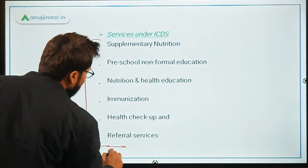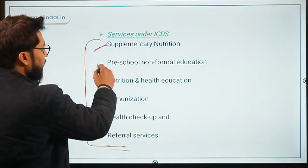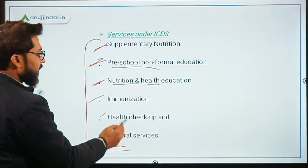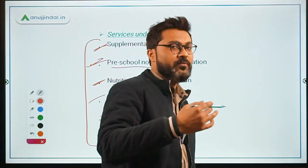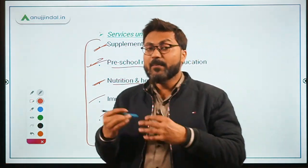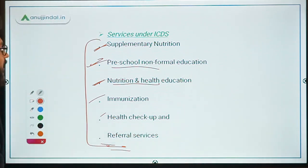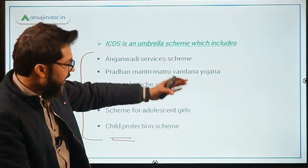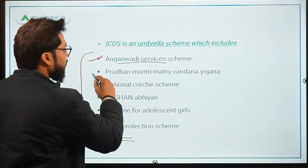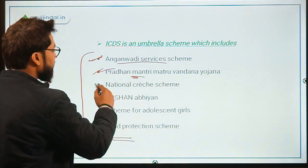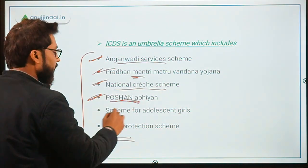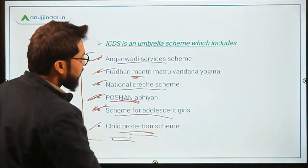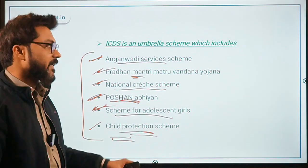Now moving ahead to the services provided under the scheme: supplementary nutrition, pre-school non-formal education, nutritional health education, immunization, health checkup, and referral services. These are the services through which the government is ensuring the development of children below six years of age. It is an umbrella scheme that includes various sub-schemes, including the Integrated Child Protection Scheme.